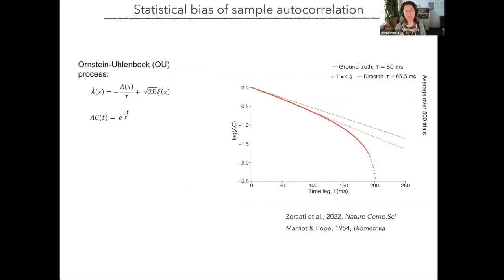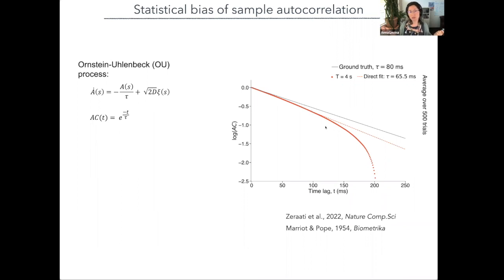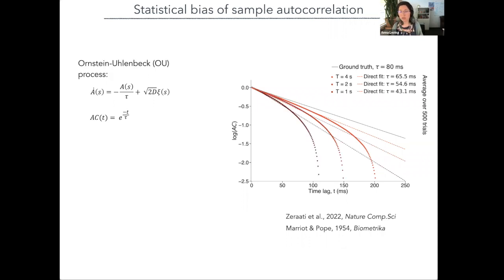We need to dig into how to estimate timescales strictly enough to test our hypothesis. Let's take a process where we know the autocorrelation: an Ornstein-Uhlenbeck process. We can input a timescale of 80 milliseconds. However, if we record many four-second intervals and estimate the timescale by fitting an exponential to the log-linear autocorrelation, we estimate only 65 milliseconds — a big underestimate. For one-second intervals typical in neuroscience trials, the error would be twofold: we'd estimate just 43 milliseconds instead of 80.